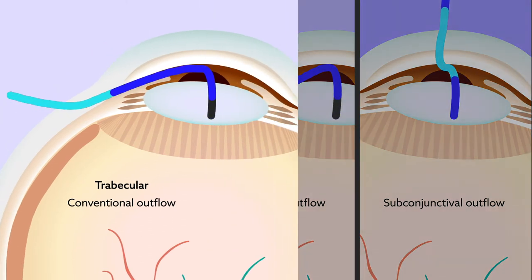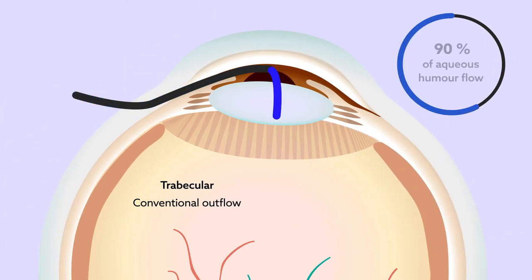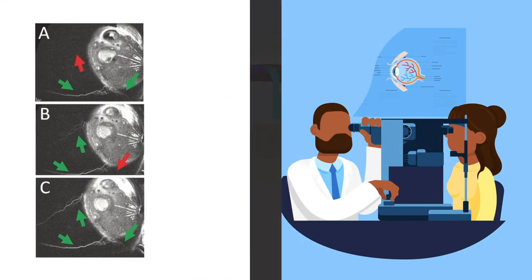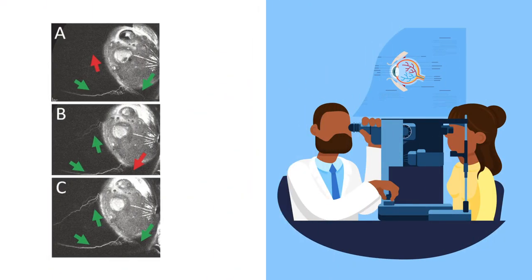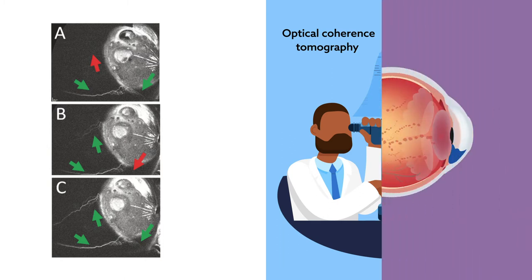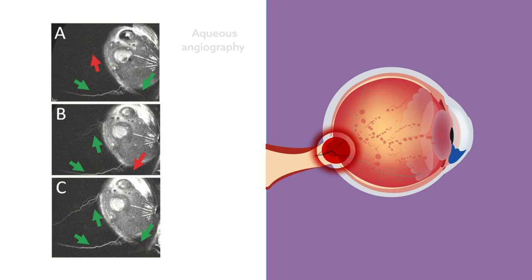Conventional outflow accounts for approximately 90% of aqueous humor flow under physiologic conditions. Here, imaging methods have focused on capturing structural or flow-based features. Optical coherence tomography has enabled researchers to assess ocular tissue in live human subjects, while tracer-based methods, such as aqueous angiography, have enabled visualization of blood flow.